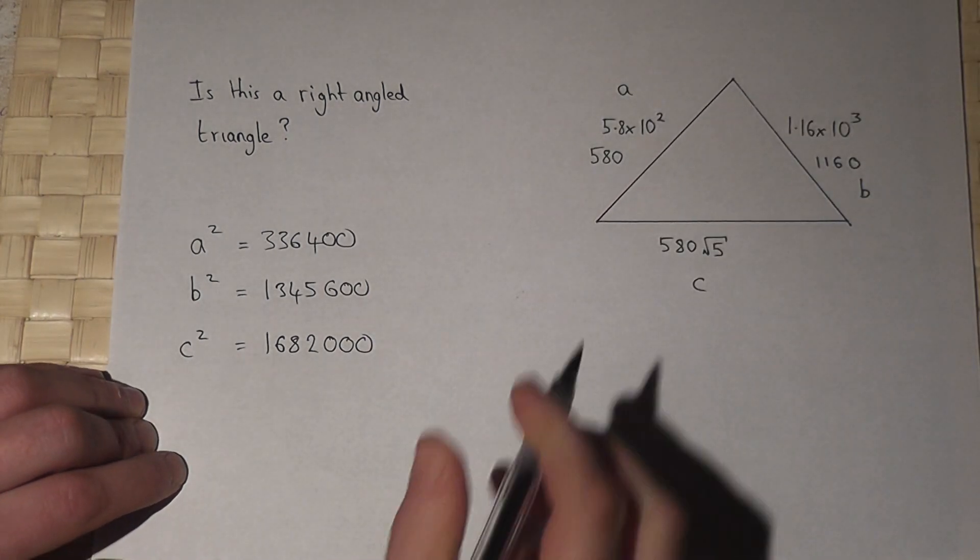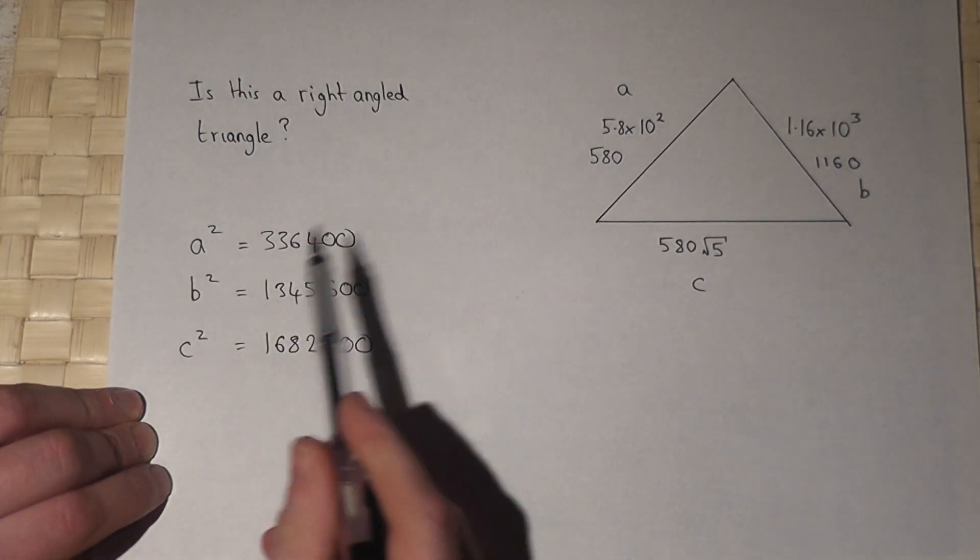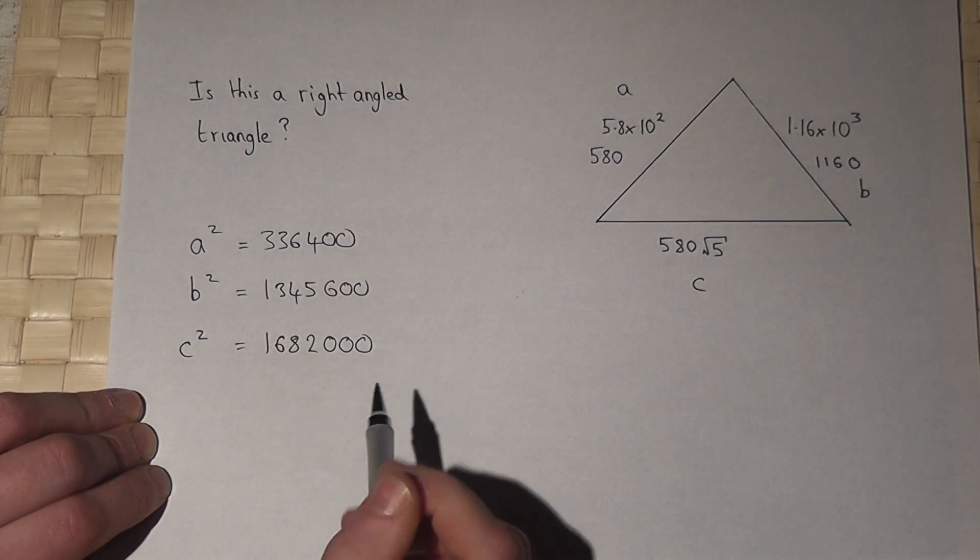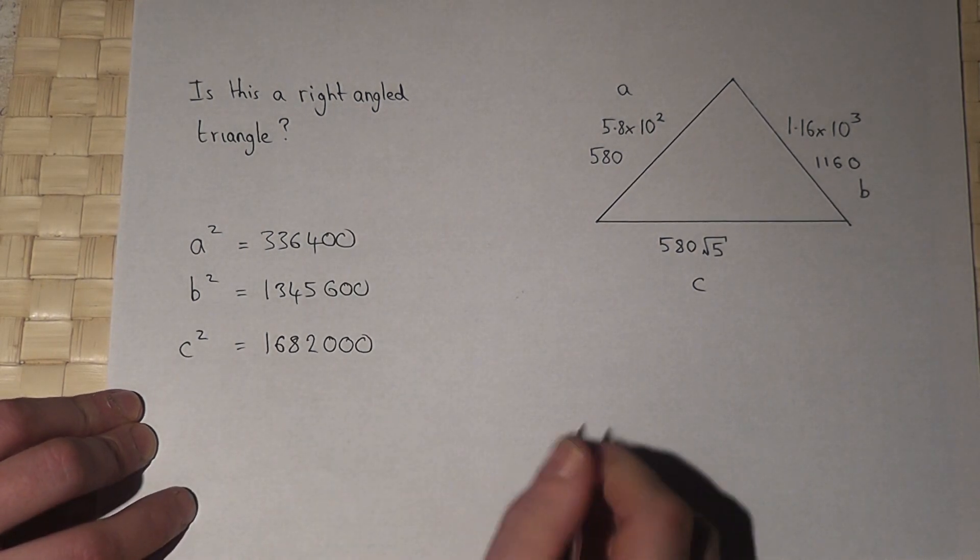Now then, for a triangle to be right-angled, it must obey Pythagoras. And this is where the clever thing comes in,